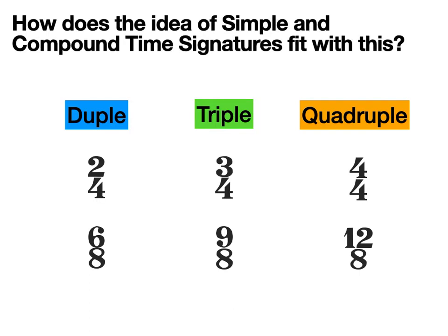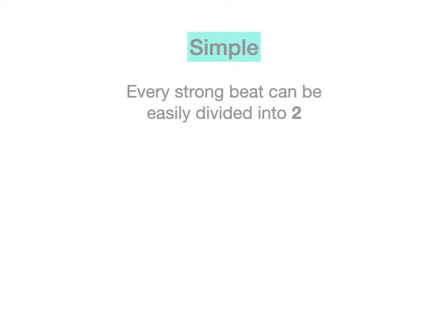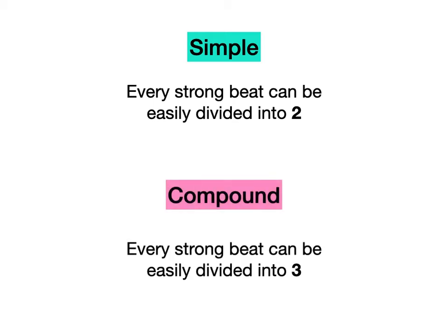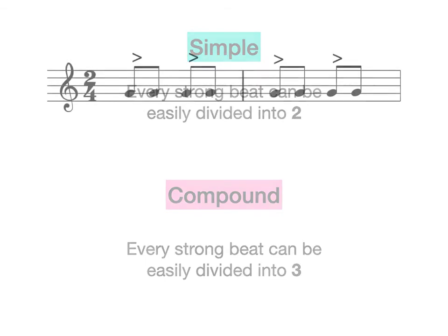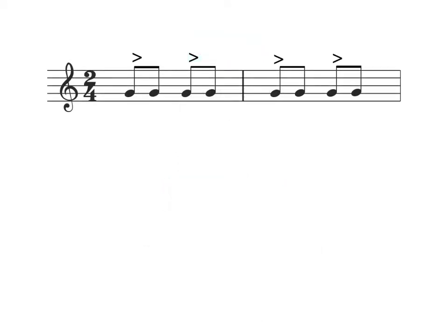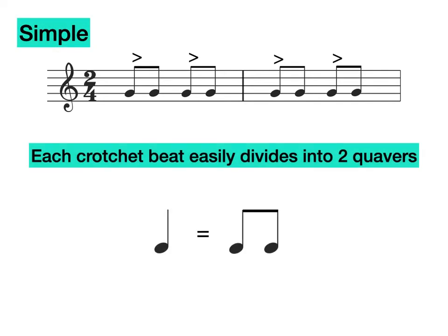But how does the idea of simple and compound time signatures fit with this? A simple time signature is where every strong beat in the bar can be easily divided into two. A compound time signature is where each strong beat in the bar can be easily divided into three. Let's revisit our 2/4 time signature. That's correct, this is a simple time signature because each crotchet beat easily divides into two quavers.